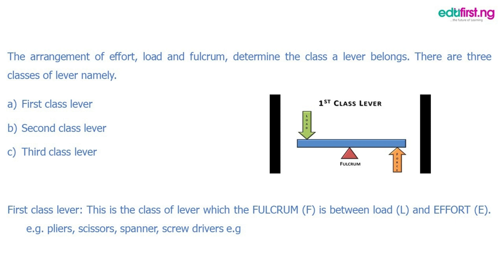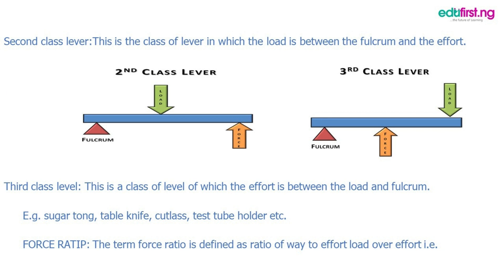There are three classes of lever. The first class lever is the class where the fulcrum is between the load and the effort — examples are scissors, pliers, and screwdrivers. The second class lever is where the load is between the fulcrum and the effort. The third class lever is where the effort is between the load and the fulcrum — examples are a table knife, cutlass, and test tube holder.